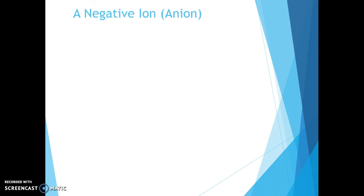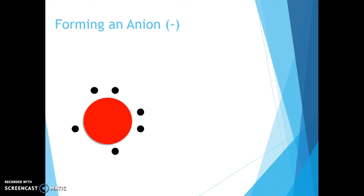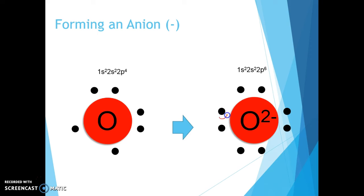Negative ions, or anions, are atoms that have gained one or more electrons. They're negatively charged because we're adding a negative charge — adding a minus means it's going to be minus overall. For example, here we have a substance with six valence electrons. Given the electron configuration 1s2, 2s2, 2p4, that's oxygen. If oxygen is going to form an ion, because it has six valence electrons it wants to gain two electrons, giving it the configuration 1s2, 2s2, 2p6. Oxygen had to gain those two electrons to give it a negative two charge.